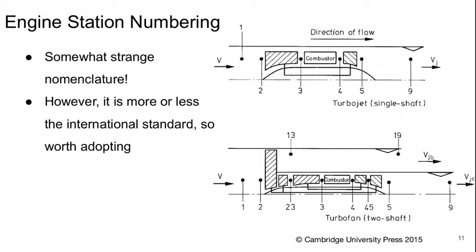Now we have our engine station numbering that we're going to introduce here before we move on. It's a little bit of an odd nomenclature, but it's more or less the international standard, so it's worth adopting. For a turbojet engine, it's straightforward enough. Our inlet is at station 1, then at the inlet to the compressor is station 2, inlet to the combustor is station 3, inlet to turbine is station 4, inlet to nozzle is station 5, and nozzle exit basically station 9.